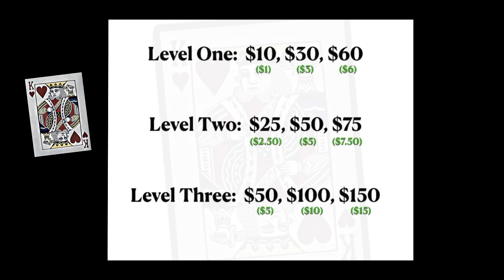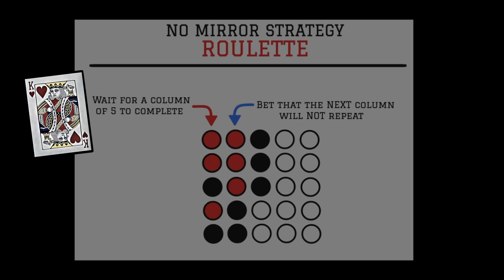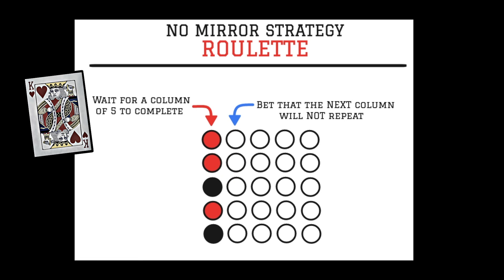Back to how we incorporate the zero on the roulette wheel into our bet spreads: for each bet you place, I recommend putting 10% on zero. So if I put $10 on red, I would put $1 on zero. If I put $30 on red, I would put $3 on zero, and so on. All we are doing is hedging our bets. If a zero were to hit, it's a 35-to-1 payout, so during your no mirror strategy you wouldn't lose everything — in fact you would make a profit if a zero hit during your bet spread.